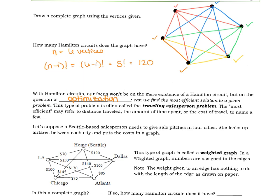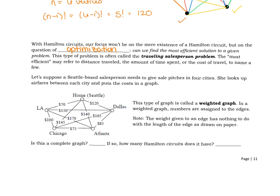Let's take a look at a salesperson that lives in Seattle. This person needs to give a sales pitch in four different cities: Dallas, Atlanta, Chicago, and LA. She looks up the airfare between all those pairs of cities and makes a graph. Notice this is a complete graph - every vertex is connected to every other vertex by an edge.